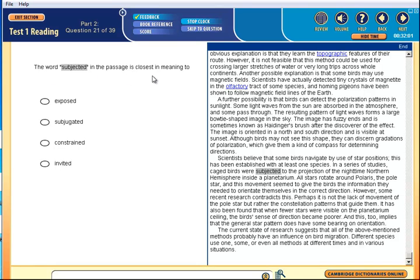The word 'subjected' is closest in meaning to. Scientists believe that some birds navigate with a list of stars. This has been established with at least one species. In a series of studies, caged birds were subjected to the projection of the nighttime northern hemisphere inside a planetarium. Subjected to the projection. So birds in a cage were shown a projection of the stars. They were shown it. They were exposed to it. Yes. Subjugated, no. Constrained, no. Invited. Clearly they were shown.